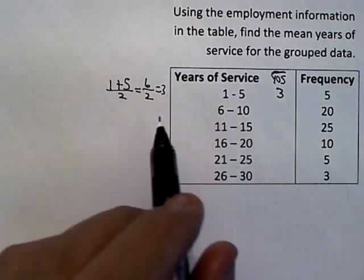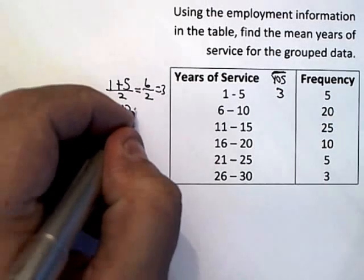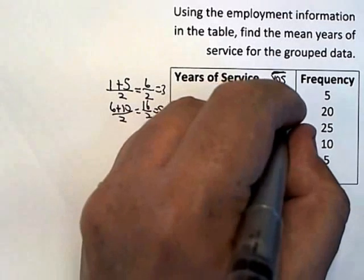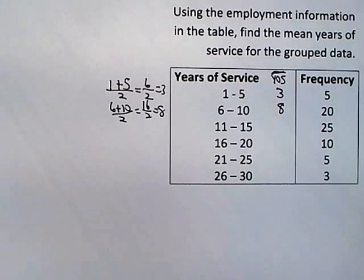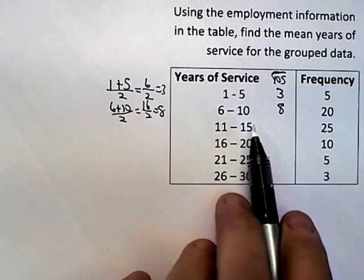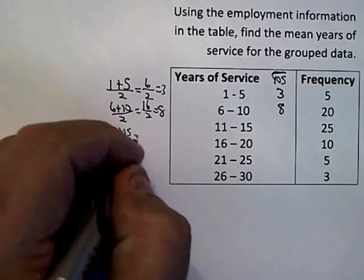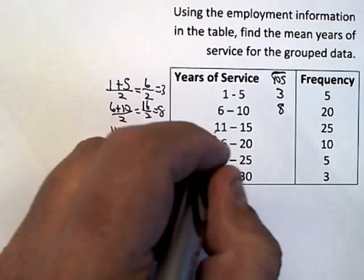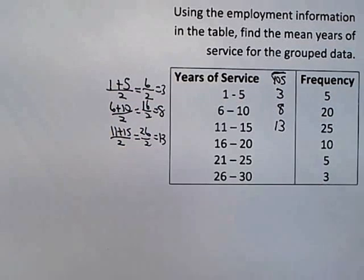Then I do the same thing for six to ten: I take six and ten, add them up, divide by two — that's 16 halves, which is eight. So I'm going to assume that all twenty of those people had eight years of service. I play that game all the way down: I take eleven and fifteen and average them, that's 26 halves, so thirteen. I'm assuming all twenty-five of those people in that interval had thirteen years of service.